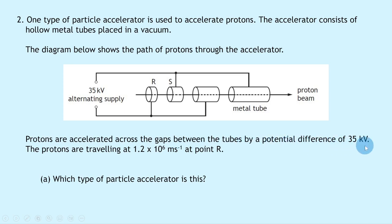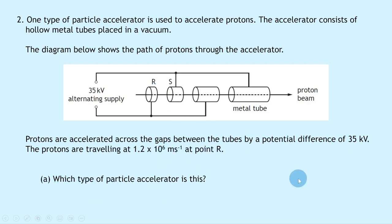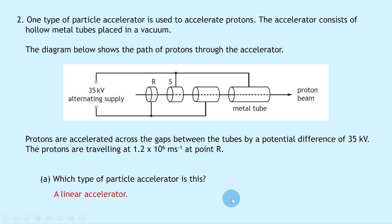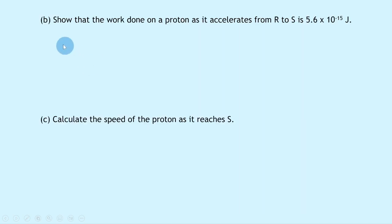The protons are traveling at 1.2 × 10⁶ meters per second at point R. Part (a) asks which type of particle accelerator this is. We have hollow tubes separated by gaps arranged in a straight line, so it must be a linear accelerator.